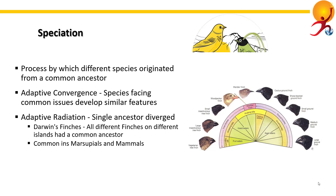On returning to England, his speculation on evolution deepened after experts informed him that these were separate species, not just varieties. Famously, the differing Galapagos birds were all species of finches. All 15 finches observed by Darwin are thought to have radiated from a common seed-eating ancestor, and they occupy different ecological niches as well as habitats.